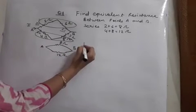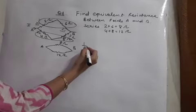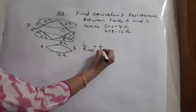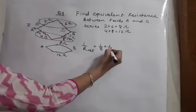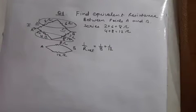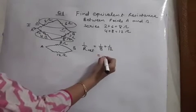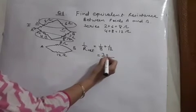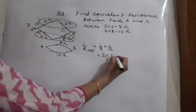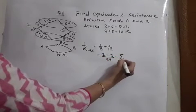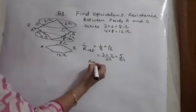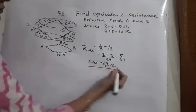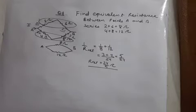Now parallel answer, how do we obtain? By reciprocal addition. So suppose we call it R net. It will be obtained by reciprocal: 1 by 8 plus 1 by 12. LCM is 24. By solving it, the R net answer is 24 upon 5 ohm. This is the answer of this question.